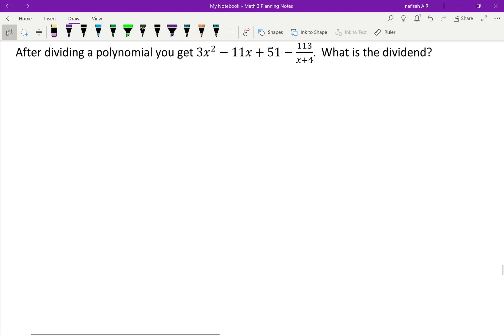After dividing a polynomial you get 3x² - 11x + 51 - 113/(x+4). What is the dividend? The dividend is what's being divided, so with this one I need to find the dividend.